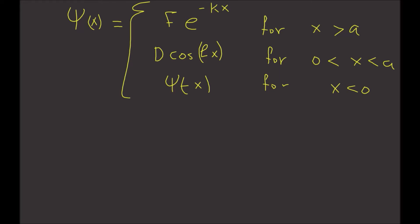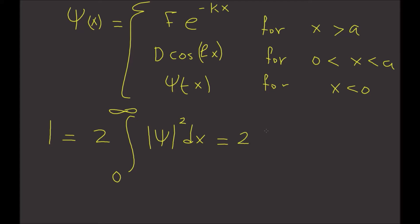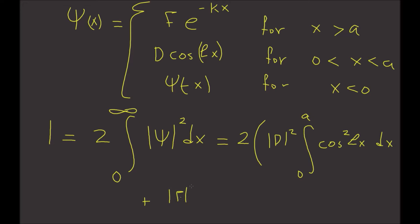So we're going to have to normalize this function. We're going to have to determine the constants F and D. So as usual, we're going to set 1 equal to 2 times the integral from 0 to infinity of psi-star psi, or the modulus squared of psi, dx, which equals 2 times the modulus squared of D times the integral from 0 to a of cosine squared of lx dx, plus the modulus squared of F times the integral from a to infinity of e to the minus 2kx dx.